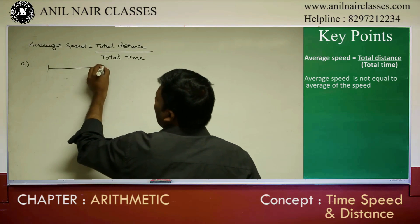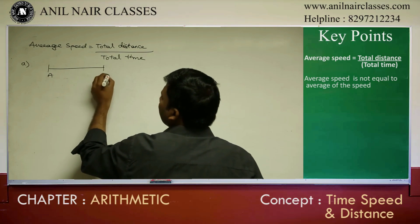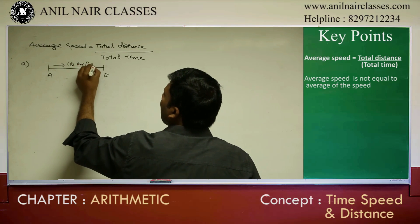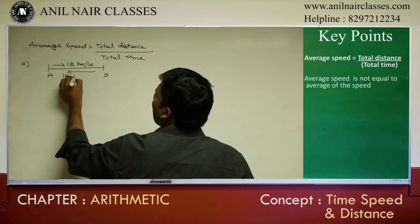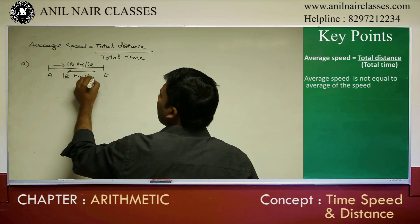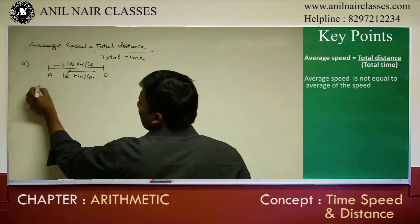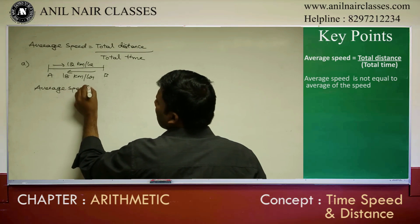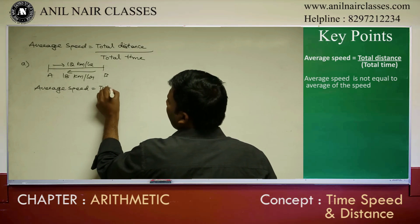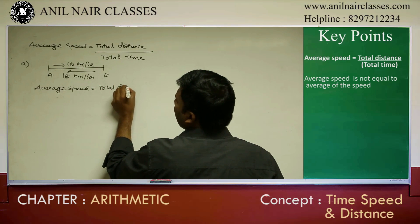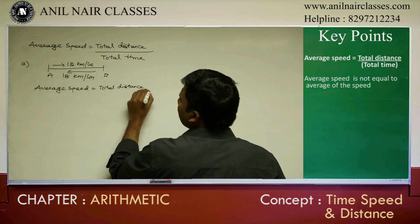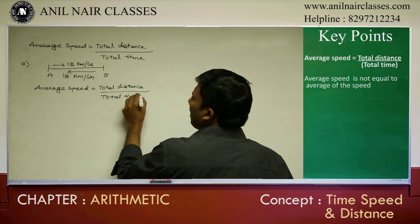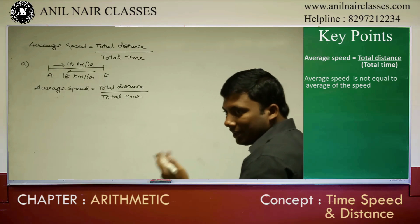First one: a person travels from A to B at 12 kilometers per hour and comes back from B to A at 18 kilometers per hour. Average speed equals total distance by total time. He travels from A to B, then comes back from B to A.